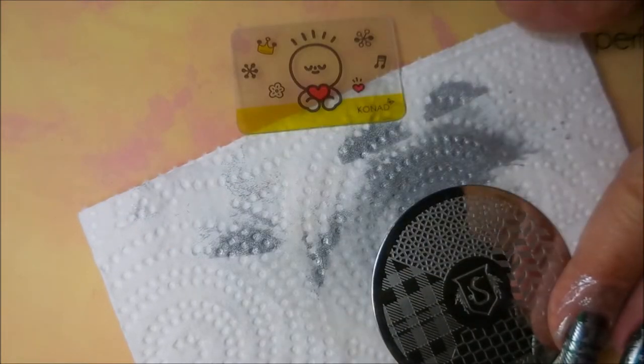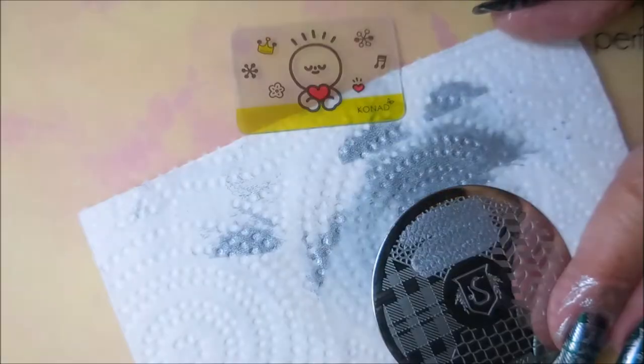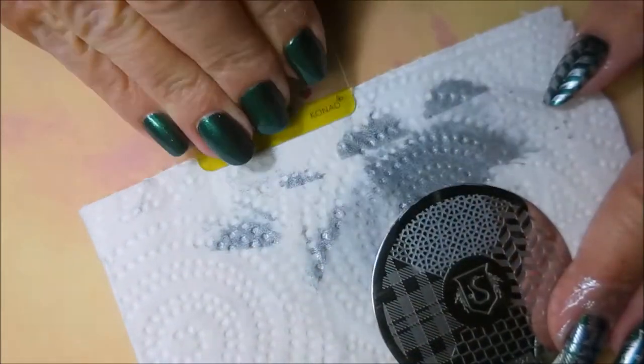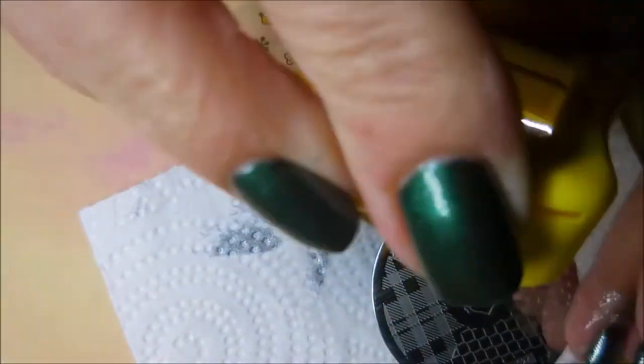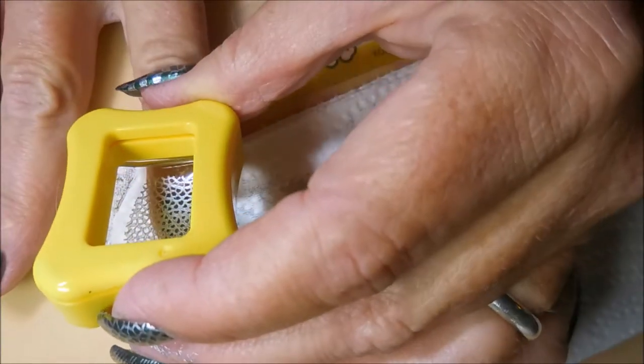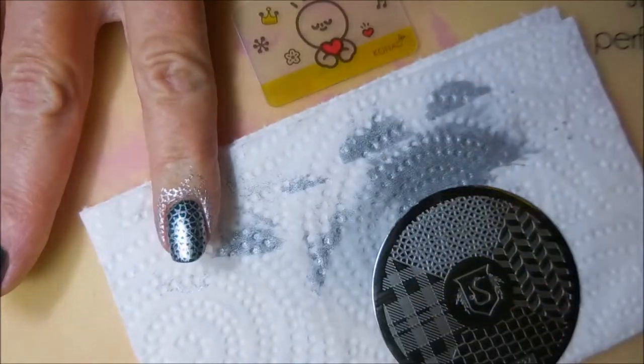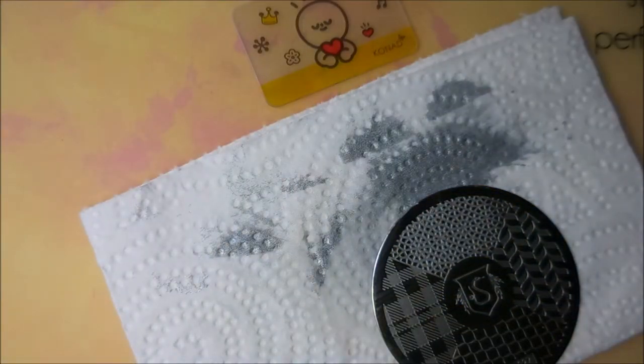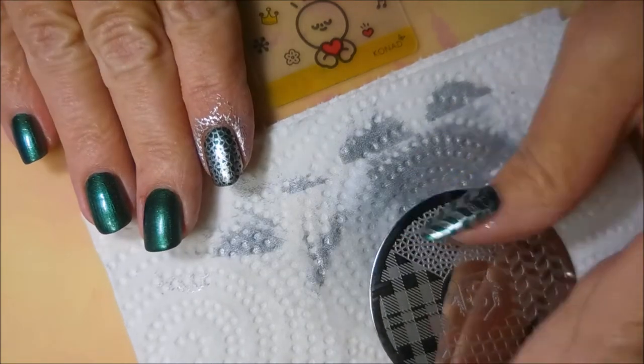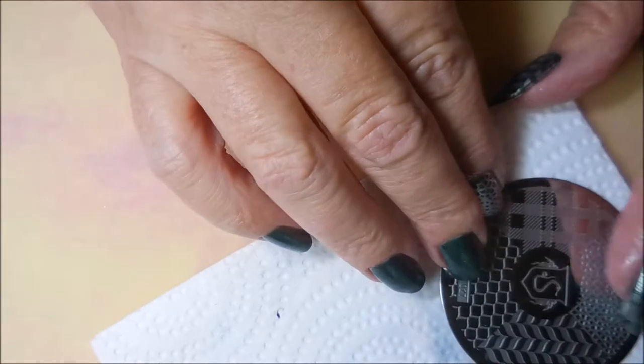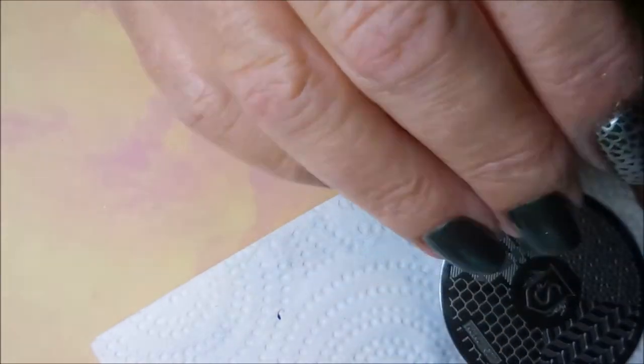And that one got a little wobble, so we're going to give that one another try also. Just because you pick it up doesn't mean you have to follow through and put it on your nail. Just keep doing it until you like what you're seeing. And there we go. Turning my paper towel around, it's getting a little wet from the polish scrape off.